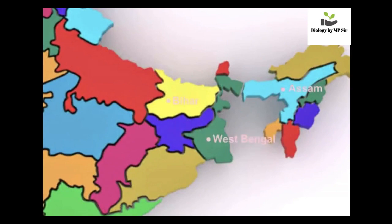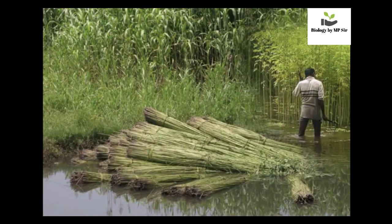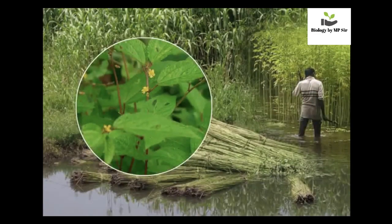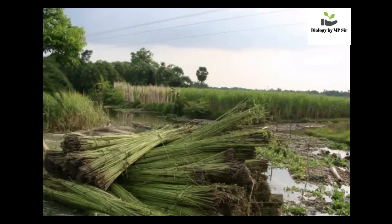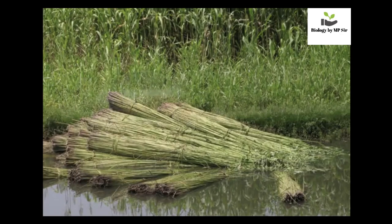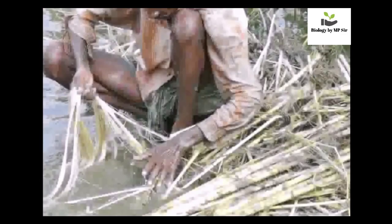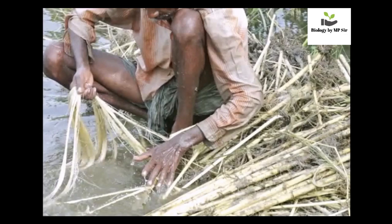In our country, jute is mainly grown in West Bengal, Bihar and Assam. Jute is cultivated during the rainy season and bears yellow flowers in 3 to 4 months. Plants are usually cut at the flowering stage, as good quality fiber is obtained at this point. Fiber from a matured plant is harder. Bundles of dry plants are kept in a pond for a few days — during this period, the gummy skin rots out to separate the fibers. This process is called retting. The jute fiber is then obtained from the retted jute by hand.